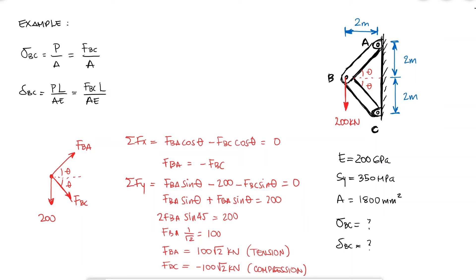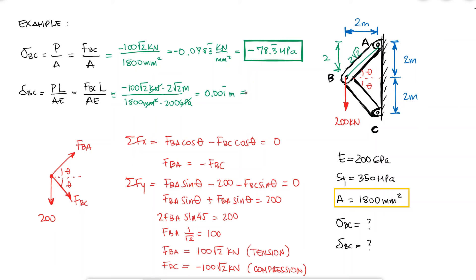Going back to the stress, I find that the stress is equal to minus 100 square root of 2 kilonewtons over 1800 millimeters squared, which yields 0.0783 repeating gigapascals or 78.3 megapascals. And substituting the values for the displacement BC, I would get minus 100 square root of 2 times 2 square root of 2 for the length of member BC, which is the hypotenuse of a right triangle of sides 2 and 2, in meters, over 1800 millimeters squared times the elastic modulus of 200 gigapascals.